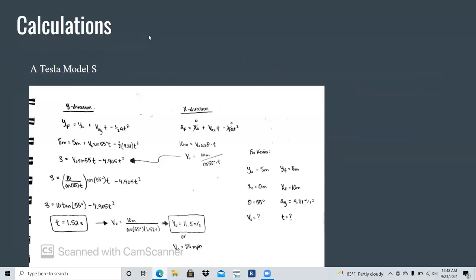So like Jessica said, our initial angle was 55 degrees. Right here in the calculations for the Tesla Model S, as you can see, we did the calculations in two different directions, in the y direction and the x direction. So my initial values are on the right side. We know the y initial, the y final is 8, the x initial is 0, x final is 10. The angle, as Jessica said, is 55 degrees and the acceleration in the y direction is 9.81. There's no acceleration in the x direction. And we're just looking for the v initial and the time.